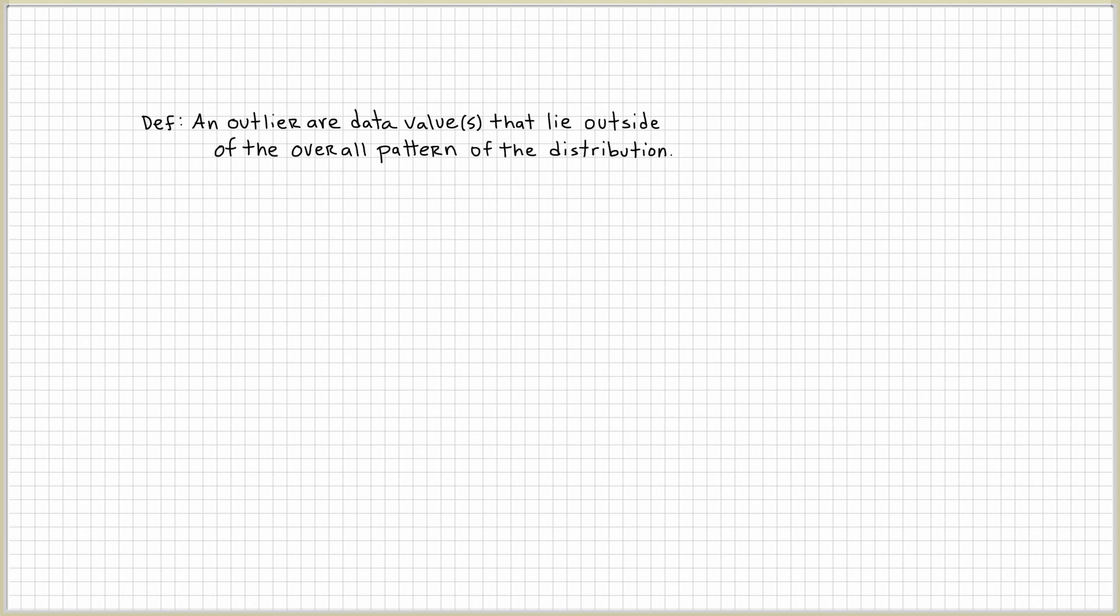What does this mean? Think of distribution as a picture of your data. Let's say you're collecting data through some type of dot plot and you notice some points that don't conform to the overall pattern, to the overall distribution. You might think these could be outliers.